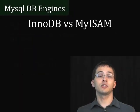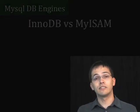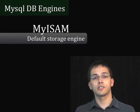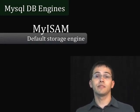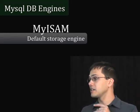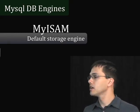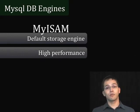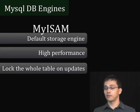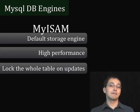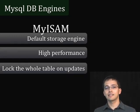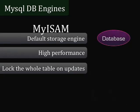InnoDB and MyISAM are the two most popular MySQL database engines, but what's the difference between the two? MyISAM is the default MySQL storage engine, so if you create a table from the console and you don't specify the engine, it's going to be MyISAM unless you've configured things a certain way. MyISAM is high performance out of the box. One way it's high performance is that it locks the whole table when it does an update. This sounds like it would be slow, but it actually makes it fast. However, there is a disadvantage to doing this.